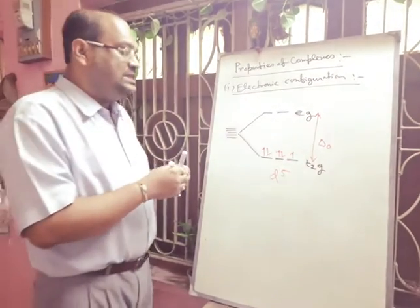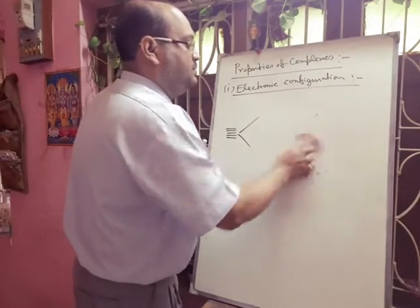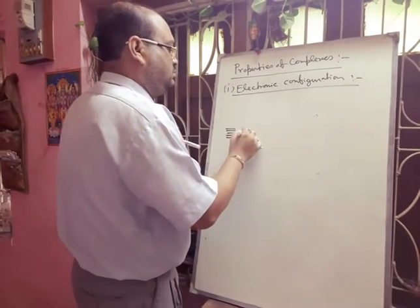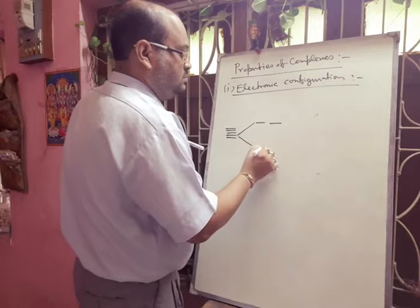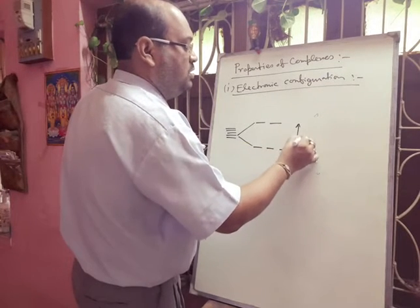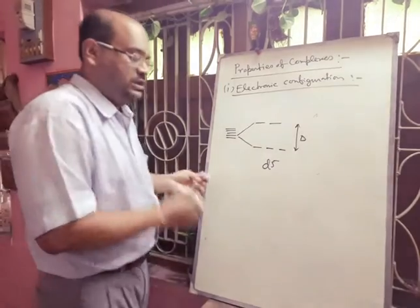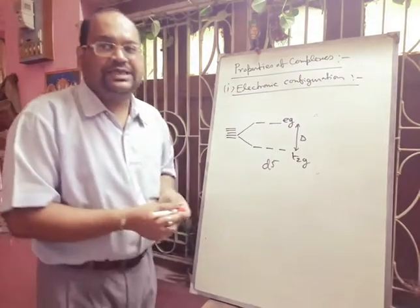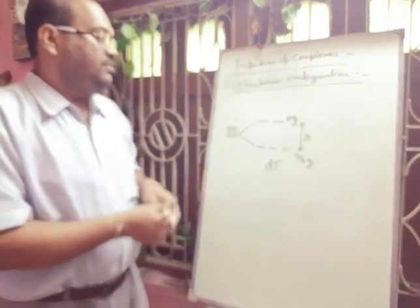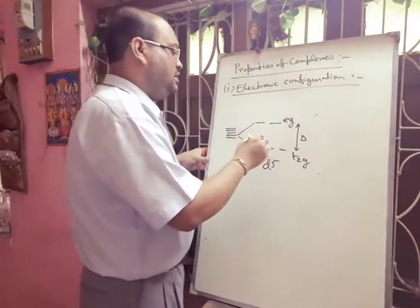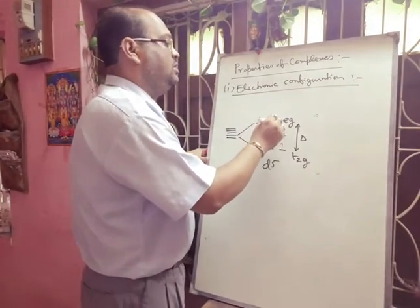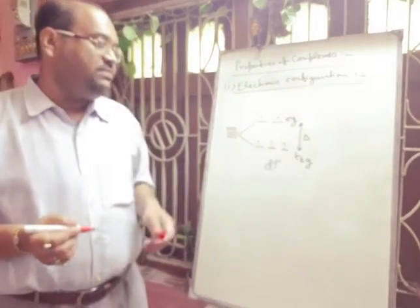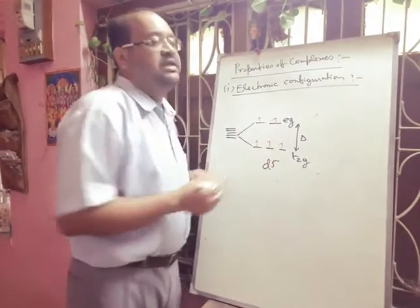On the other hand, if the energy difference delta o is small — for a d5 system — the t2g and eg levels have a small energy gap. In this case, the five electrons will remain unpaired because the energy difference is very small. For a d6 or d7 system, there will be pairing.